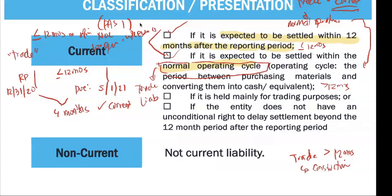Third, a liability is current if it is held mainly for trading purposes — meaning for buy and sell purposes. If you create a liability and then settle it repeatedly — create and settle, create and settle — we call that trading of a liability, and it is still current. And lastly, a liability is current if the entity does not have an unconditional right to delay settlement beyond the 12-month period.